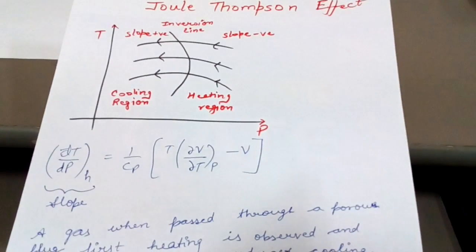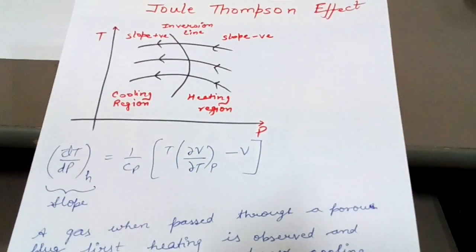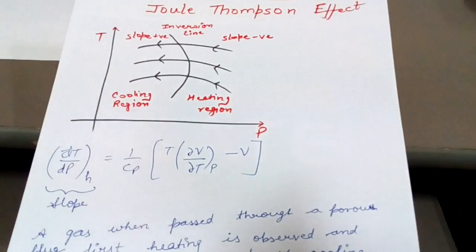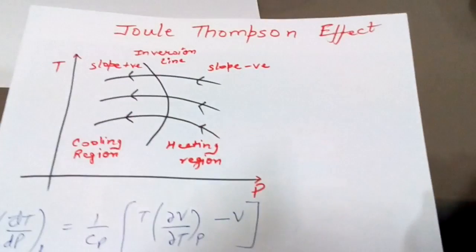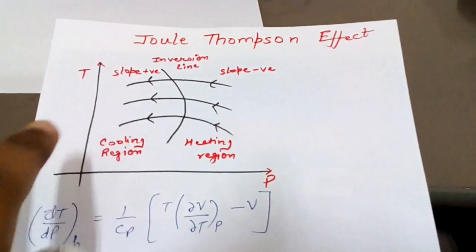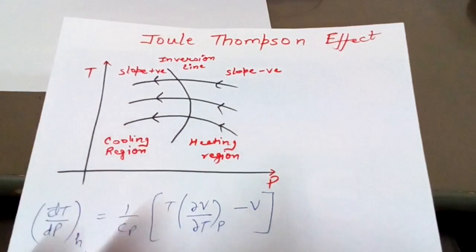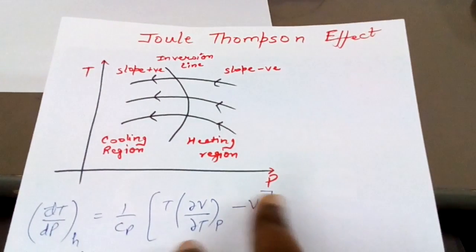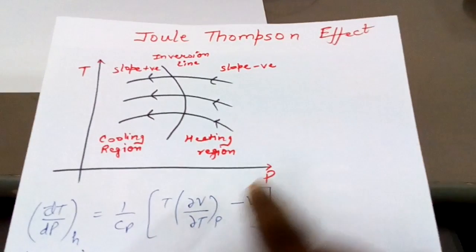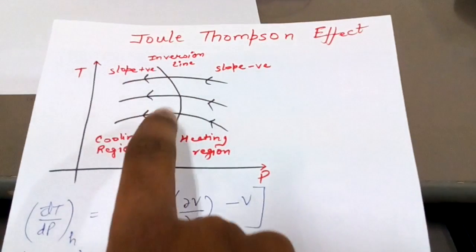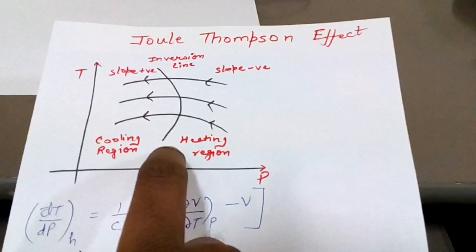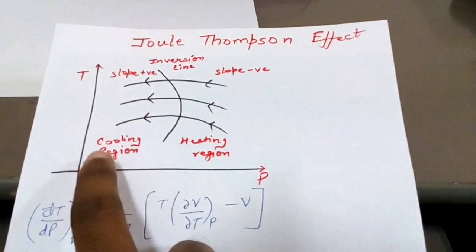But as soon as the pressure equalizes or the pressure reduces, then cooling is observed. Now we show the Joule-Thompson effect process on T-P diagram, that is temperature and pressure diagram. This is the inversion line. This is the heating region, cooling region.